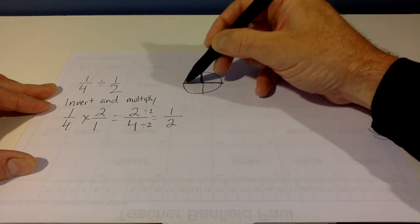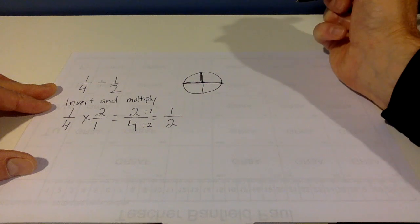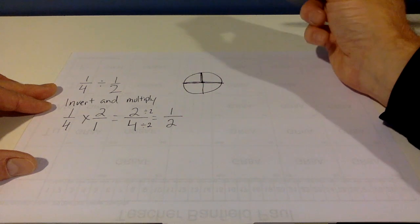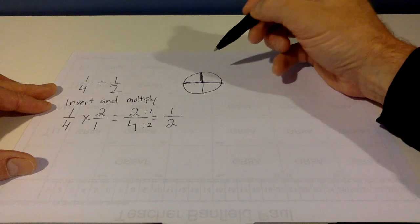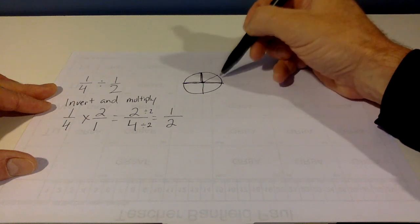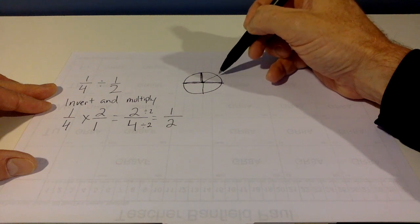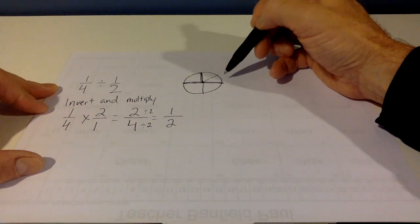Because if you remember from the multiplication video, 1 quarter times a half will get us an eighth. So it goes half as big. But if we're dividing by half...